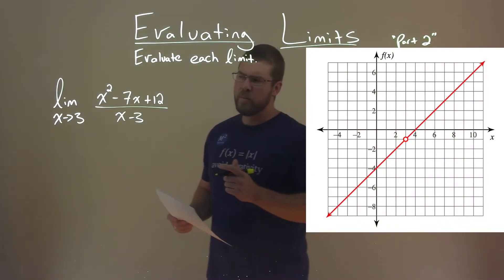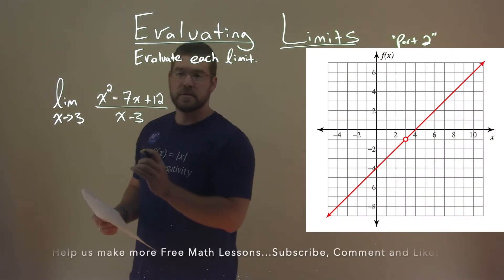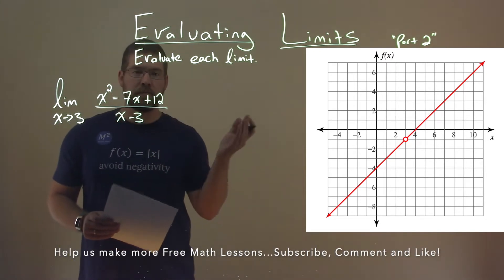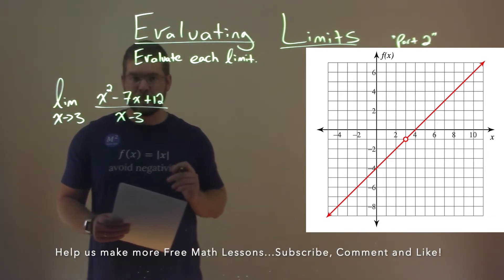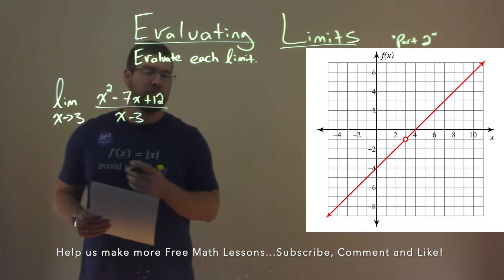We're given this problem right here. The limit as x approaches 3 of x squared minus 7x plus 12 all over x minus 3, and we have to solve this limit.